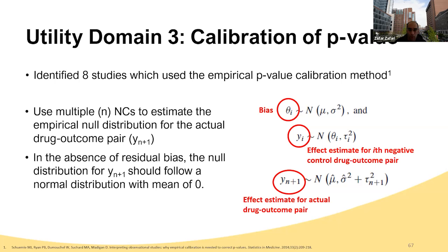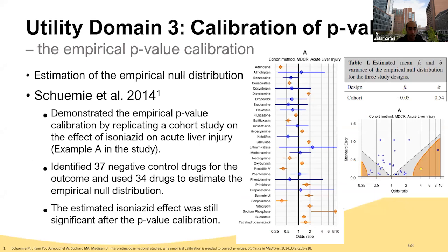The third utility domain was the calibration of p-value, proposed by Schuemie et al. in 2014. Using the same principles as the confidence interval calibration, they used a set of negative drug-outcome pairs to build the empirical null distribution. A good example is the same study by Schuemie et al.—they replicated a cohort study on the effect of isoniazid on acute liver injury. They had 34 negative drug-outcome pairs, built an empirical null distribution from these negative pairs, and showed that the isoniazid effect was still significant after the p-value calibration.